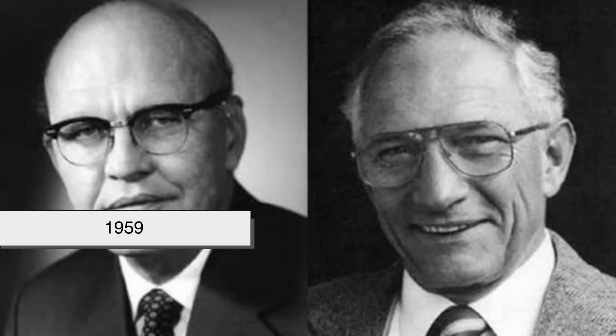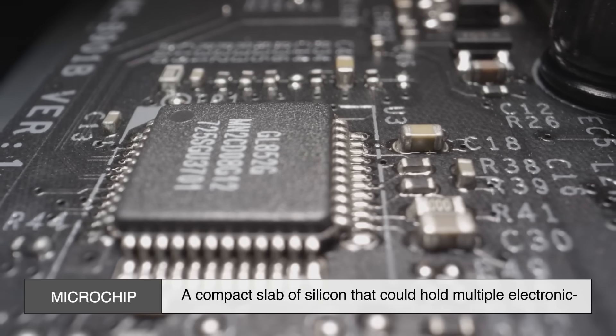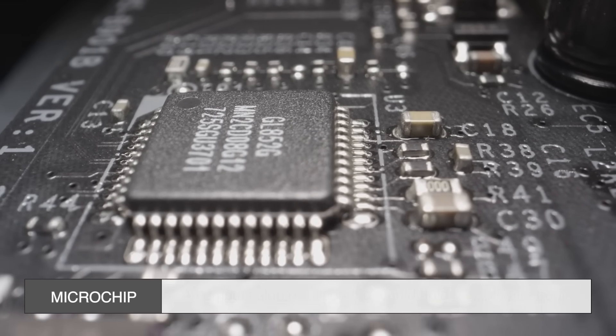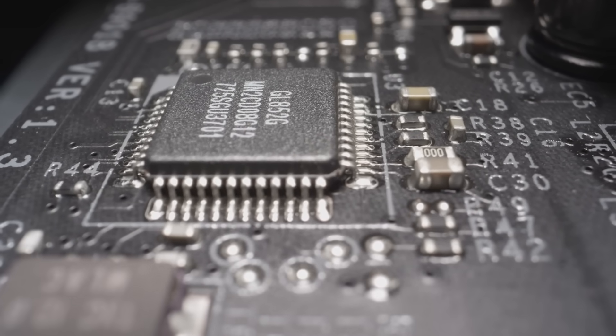In 1959, Jack Kilby and Robert Noyce independently developed what we now call the microchip, a compact slab of silicon that could hold multiple electronic components, including transistors. This changed the game entirely.